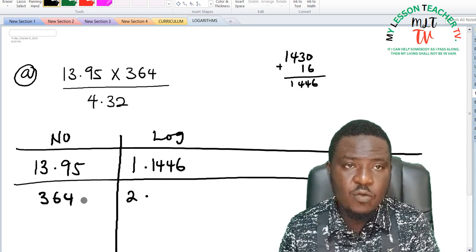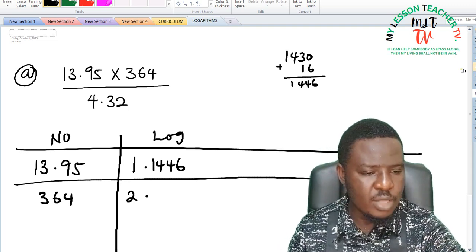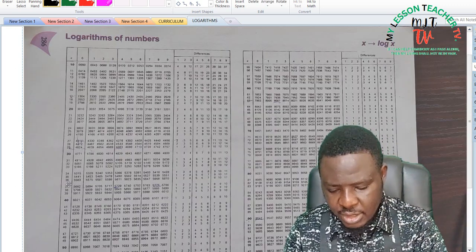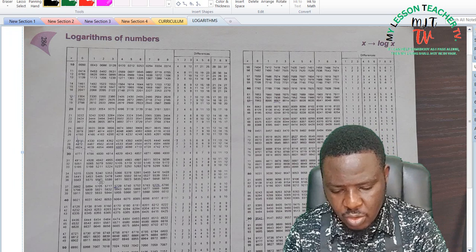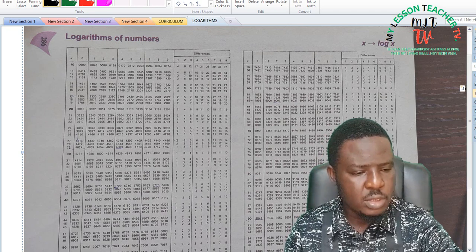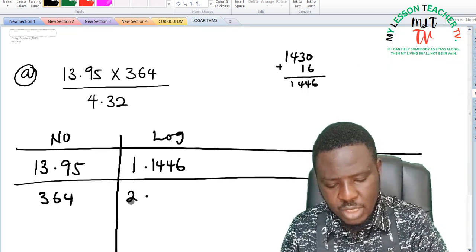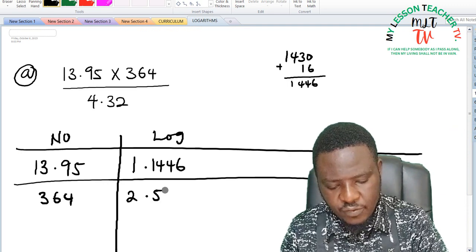So once it is 3 digits you look for all that becomes 0. So 36 under 4, go back to the logarithm table, 36 is somewhere here, 36 under 4 is 5611. So this is said to be 5611, so that is 2.5611.